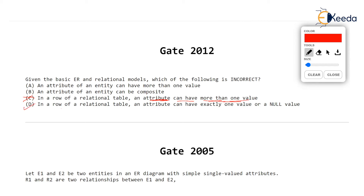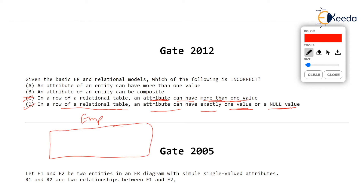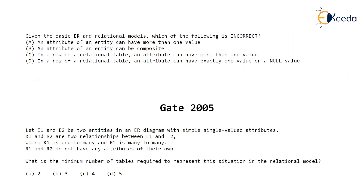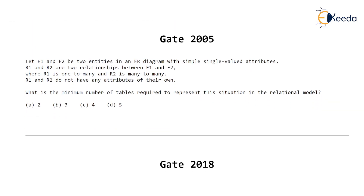Option D states: in a row of a relational table, an attribute can have exactly one value or a null value — this is valid. In an EMP table with a phone column, you can store only one value, and if an employee has no phone number you store null. The incorrect option is C. In the next video we will see more GATE questions from GATE 2005. Thank you very much.